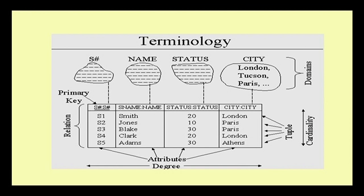Let us look at a university database. The concept gives another example: a supplier relation with supplier name, supplier status, and city. The attributes are supplier number, supplier name, supplier status, and supplier city. The number of attributes is the degree, and the number of tuples at a particular instant is the cardinality. One of these attributes is called the primary key — we will discuss this in detail later — and each attribute has a domain associated with it, such as integer, string, or city.